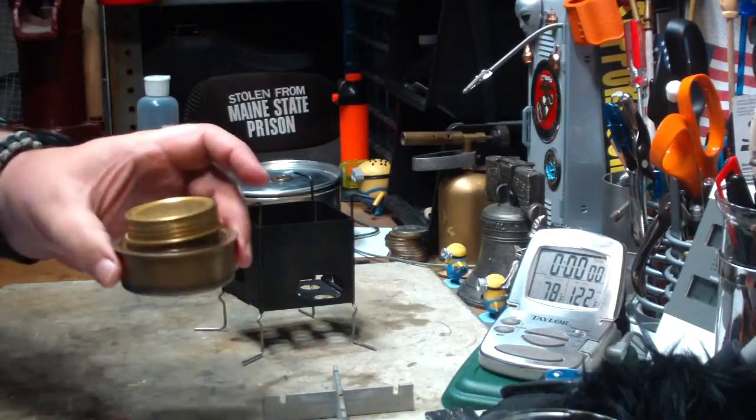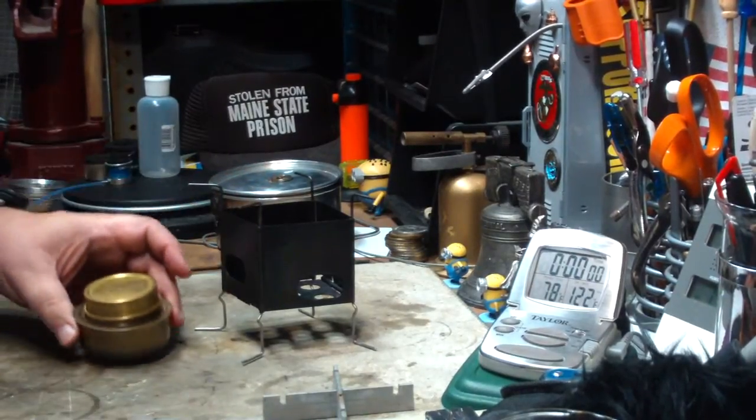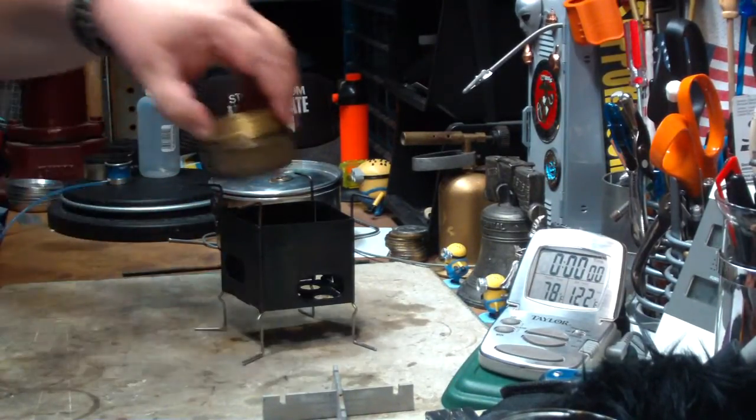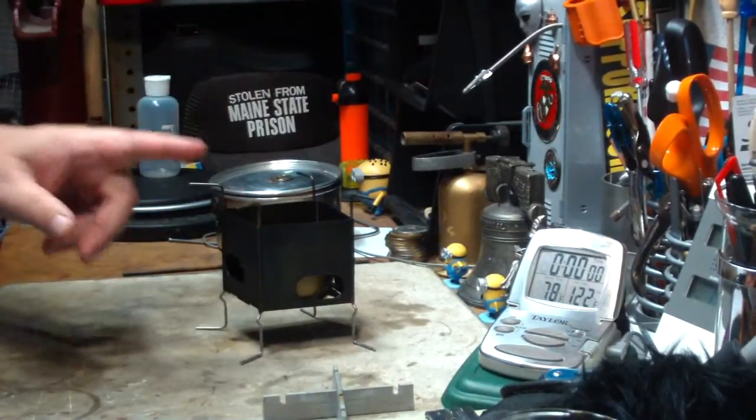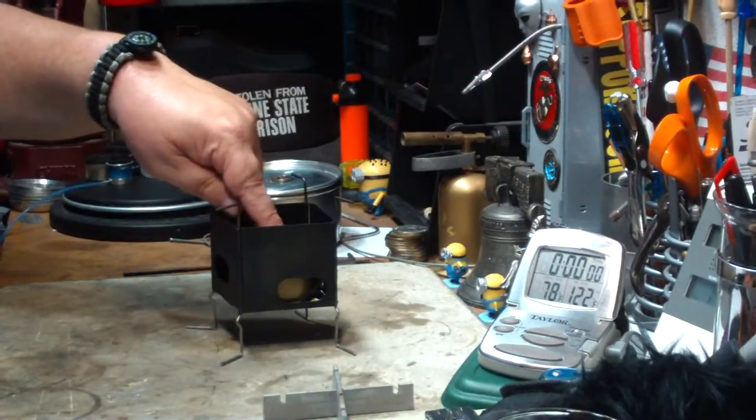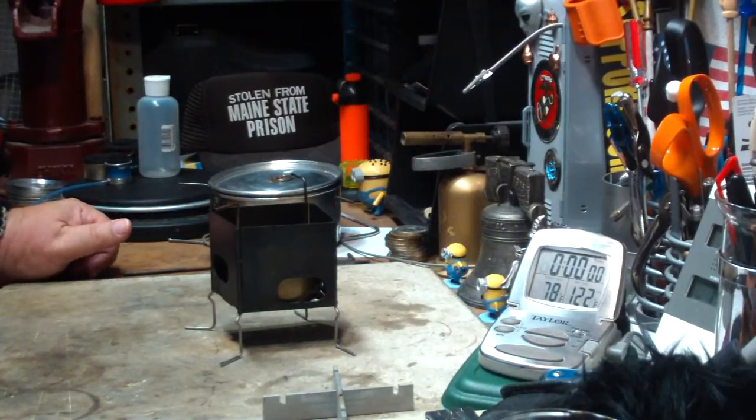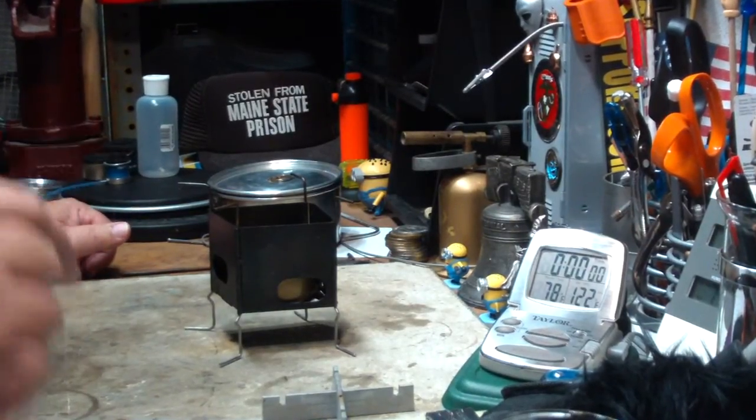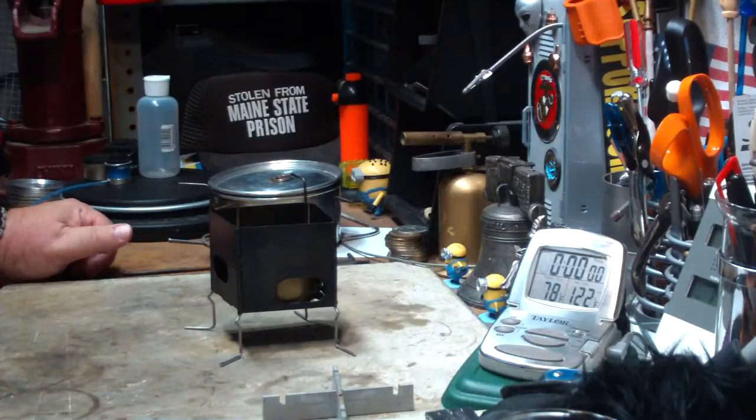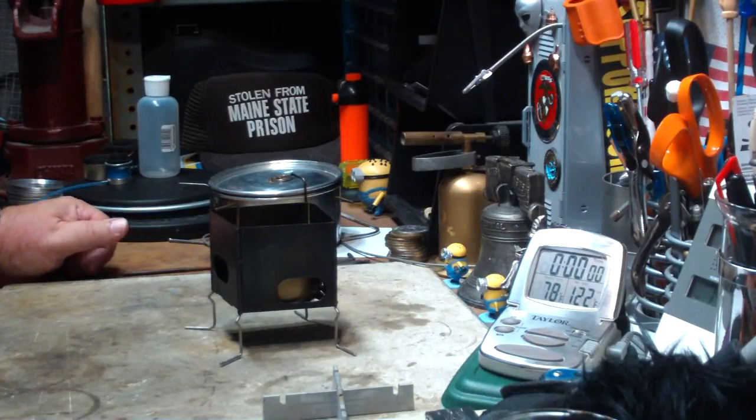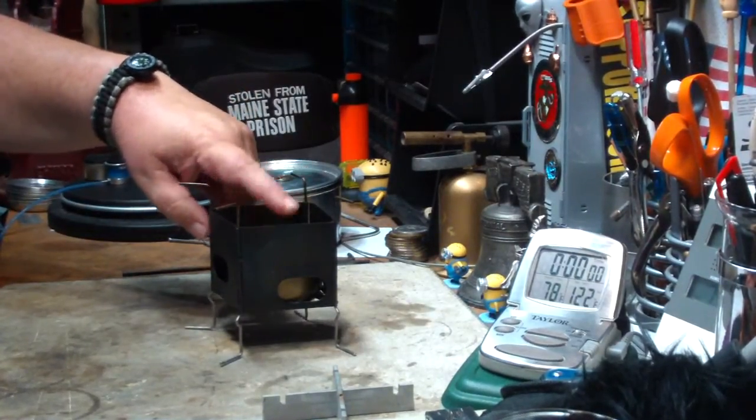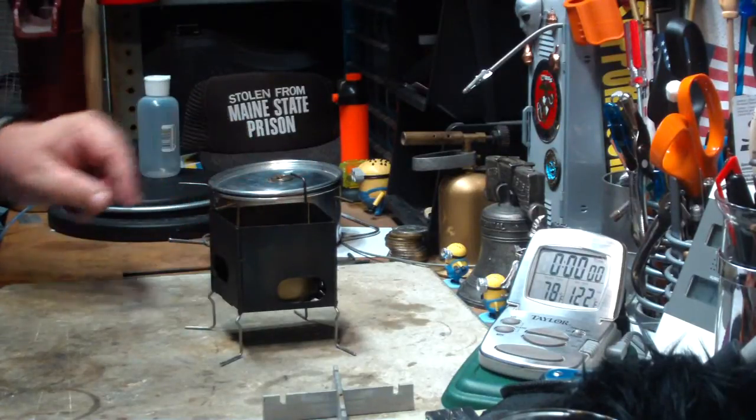So I thought I'd do my first one with the Mini Trangia. Now putting this in here, it fits perfectly, but the distance between the top of the burner to the bottom of the pot is about one and three quarter inches, which is a little bit large for the sweet spot, the one inch that I like to try to keep it, the pot to the burner rather.